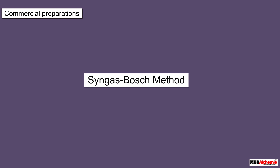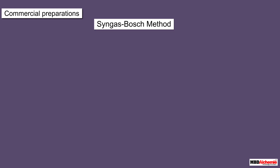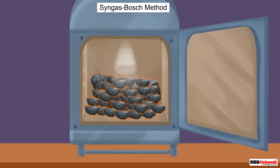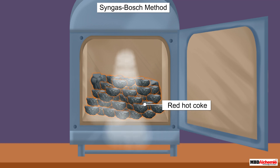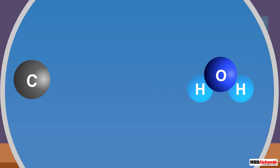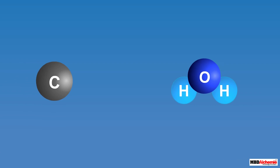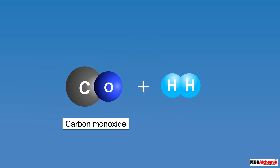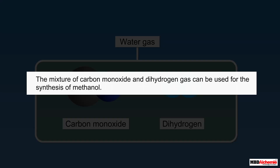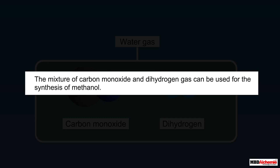Another commercial method of the preparation of dihydrogen is the Singa's Bosch method. In this method, steam is passed over a hydrocarbon or red hot coke at a high temperature in the presence of a catalyst. This results in the formation of a mixture of carbon monoxide and dihydrogen gas, called water gas.